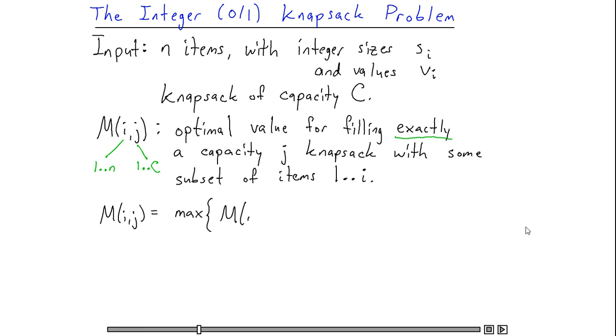One of them, m i minus 1 j, denotes the optimal way of filling a capacity j knapsack without using the ith item, only using items from 1 up to i minus 1. And I take the maximum of this with m of i minus 1, j minus si, plus vi.